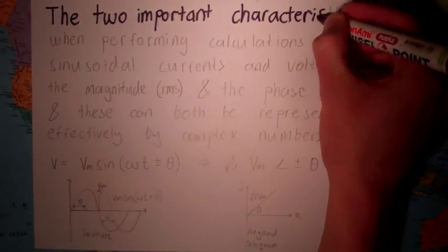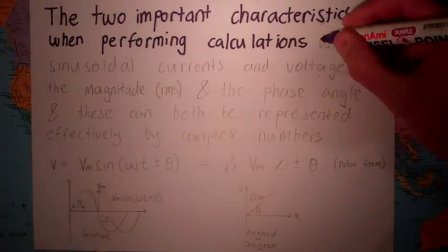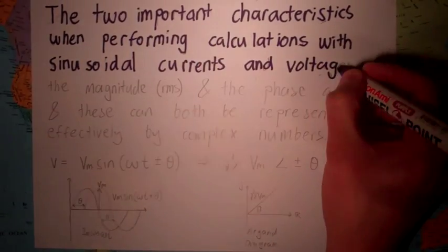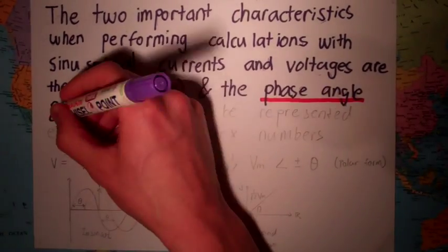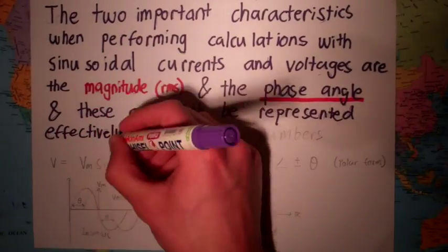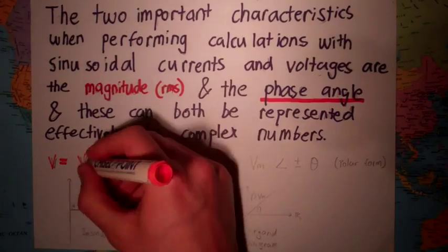The two important characteristics when performing calculations with sinusoidal currents and voltages are the magnitude, RMS, and the phase angle, and these can be represented effectively by complex numbers.